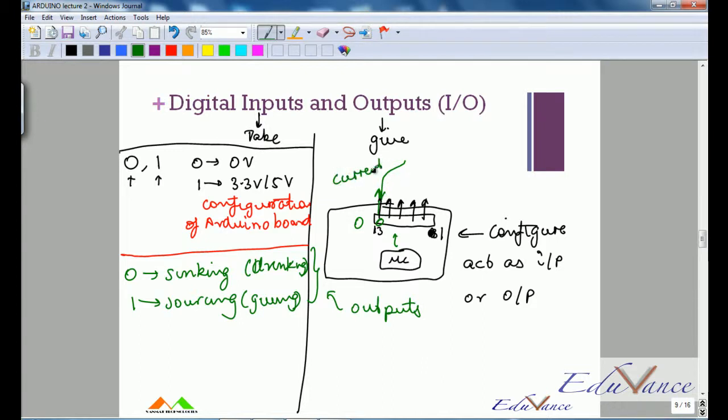When my Arduino gives a one, at that time I am actually giving current out. Now that said, sourcing would mean logic high, which is 3.3 or 5 volts, and sinking means logic low or zero, which is at zero volts.